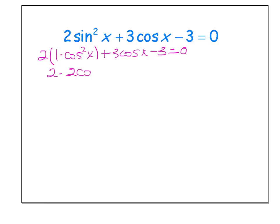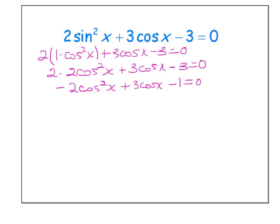Applying the distributive property, we have two minus two cosine squared x plus three cosine x minus three equals zero. Combining like terms with the two and negative three gives us negative two cosine squared x plus three cosine x minus one equals zero. Since we rarely want a negative leading coefficient, I'll multiply everything through by negative one, giving two cosine squared x minus three cosine x plus one equals zero.